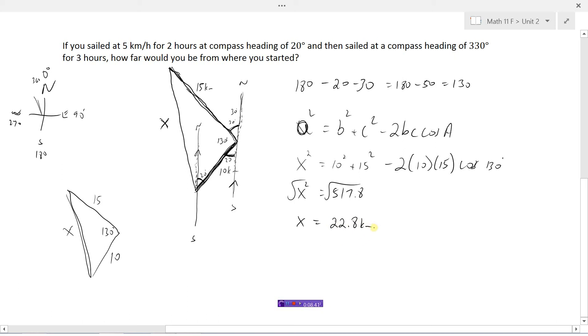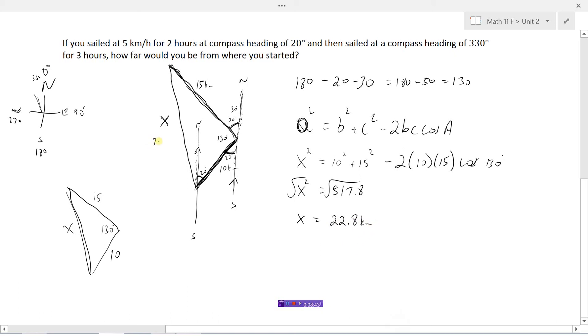22.756, let's call it 22.8. So the boat is a distance of 22.8 kilometers away from where it started. The boat is 22.8 kilometers from where it started. Always a good idea to answer the question by writing a sentence. So this is how we can use sine law and cosine law to solve some word problems that involve obtuse angles, angles more than 90 degrees.